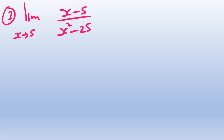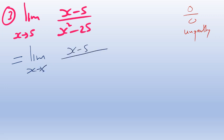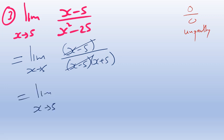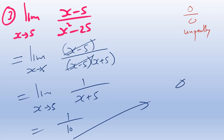Now: the limit of (x − 5) over (x² − 25) as x approaches 5. Direct substitution gives zero over zero — the flags go up, that's unpretty. So we look for factorization. x² − 25 is a difference of two squares: (x − 5)(x + 5). The (x − 5) cancels, and we're left with the limit as x → 5 of 1 over (x + 5), which gives 1 over 10.